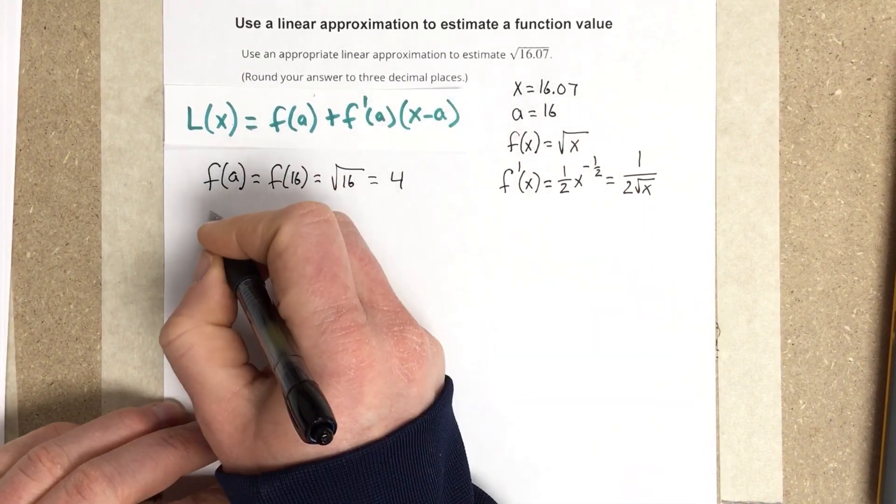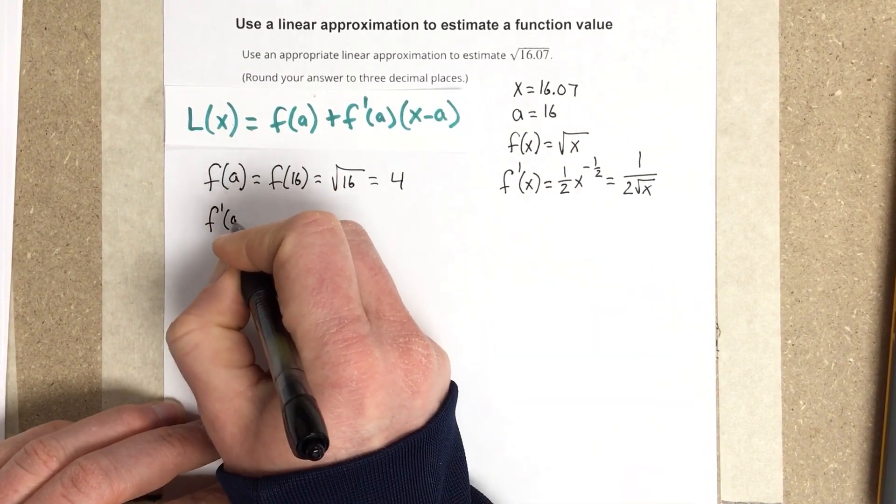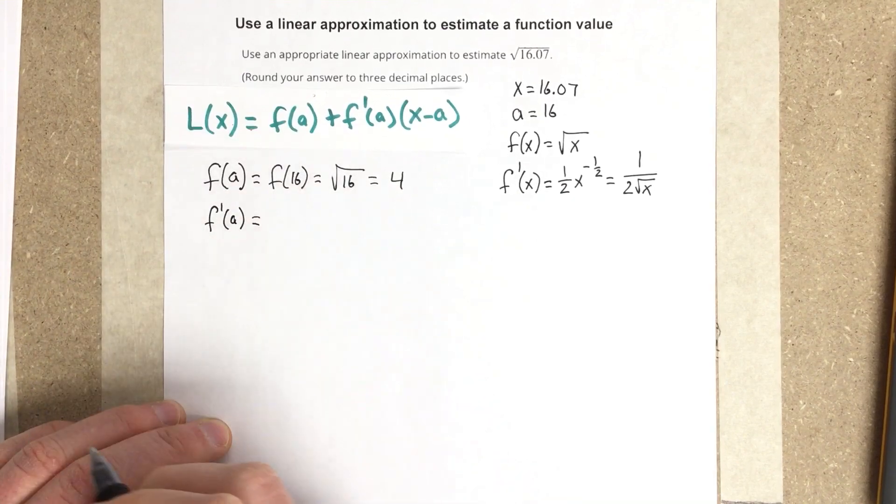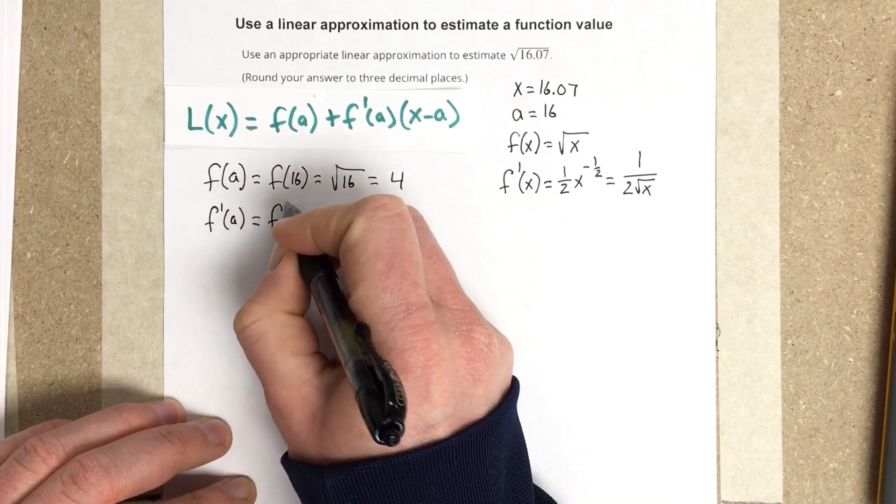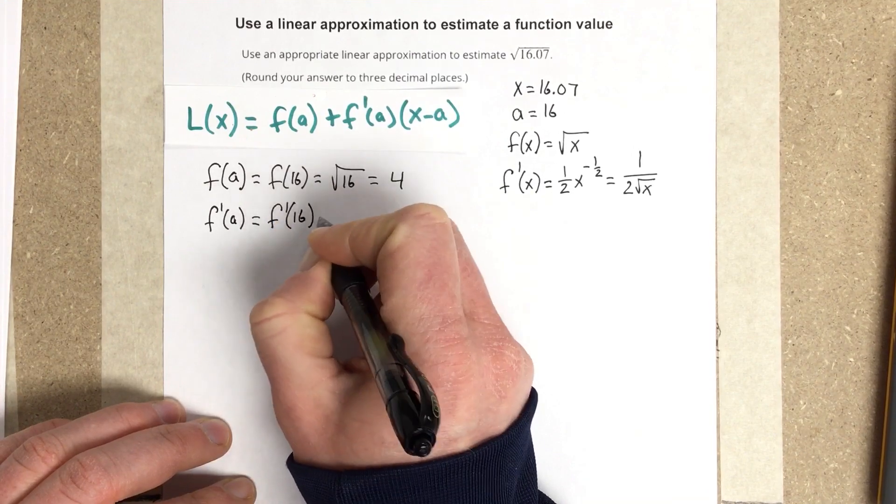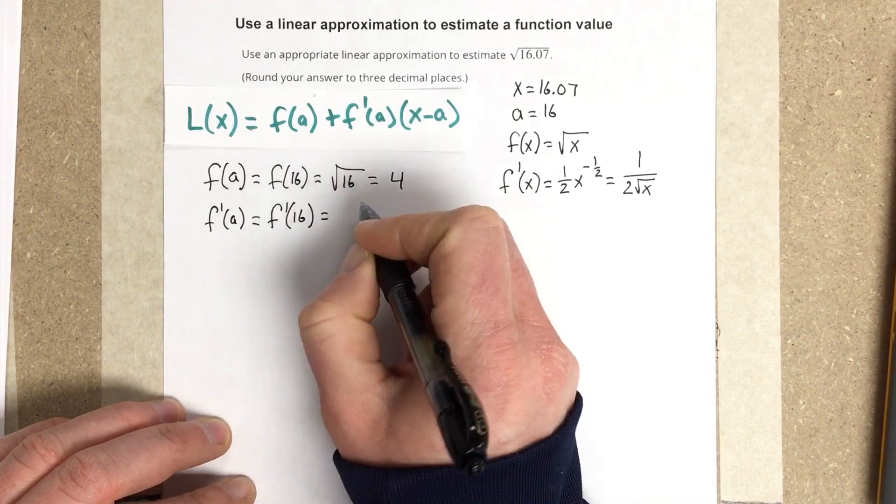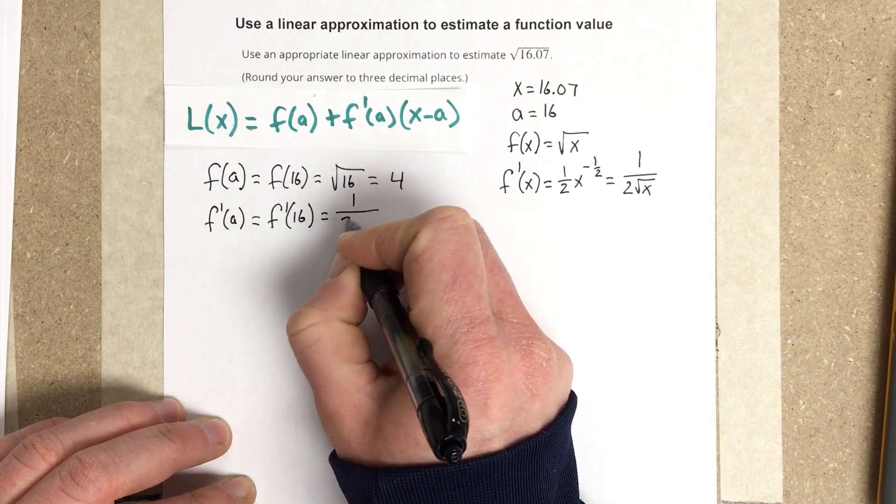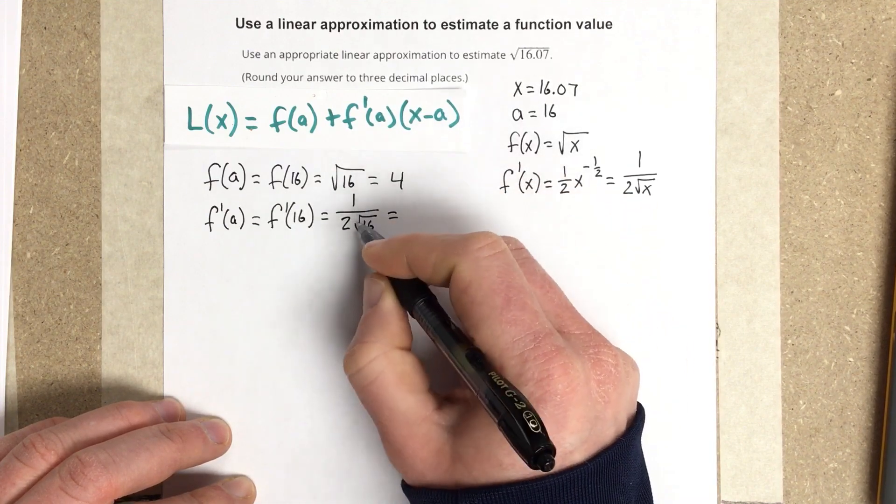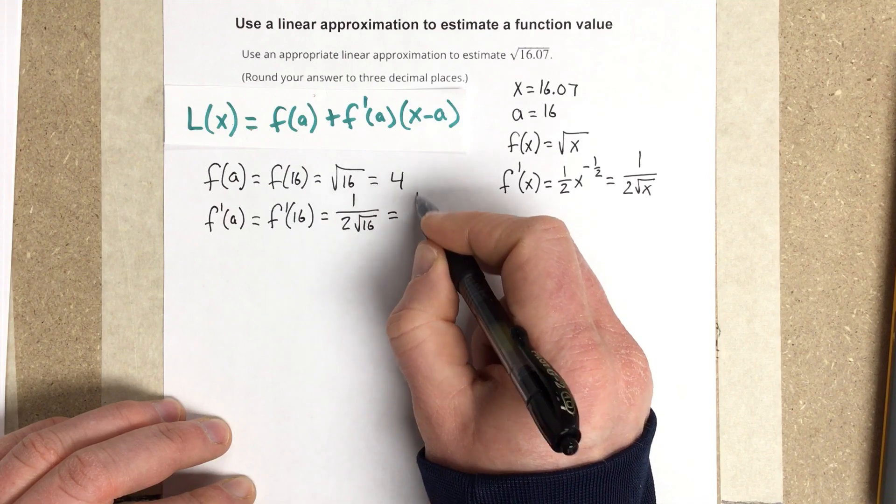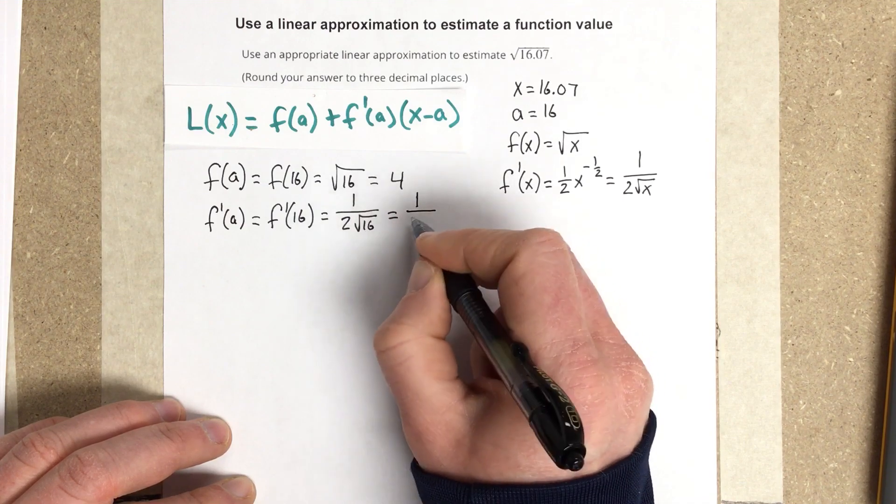Then I'm going to find f prime of a, and f prime of a is going to equal f prime of 16, which is 1 over 2 root 16, which ends up being root of 16 is 4, so I get 1 over 2 times 4, which is 8.